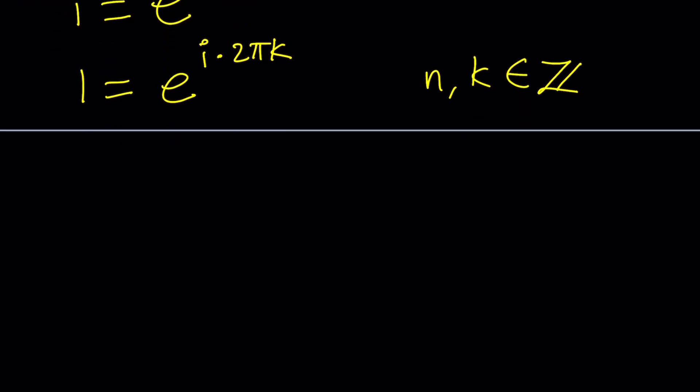Now we have e to the power i times pi over 2 plus 2 pi n, and then we're going to raise it to the power e to the z, and then that is going to equal to 1, which is e to the i times 2 pi k. Great.